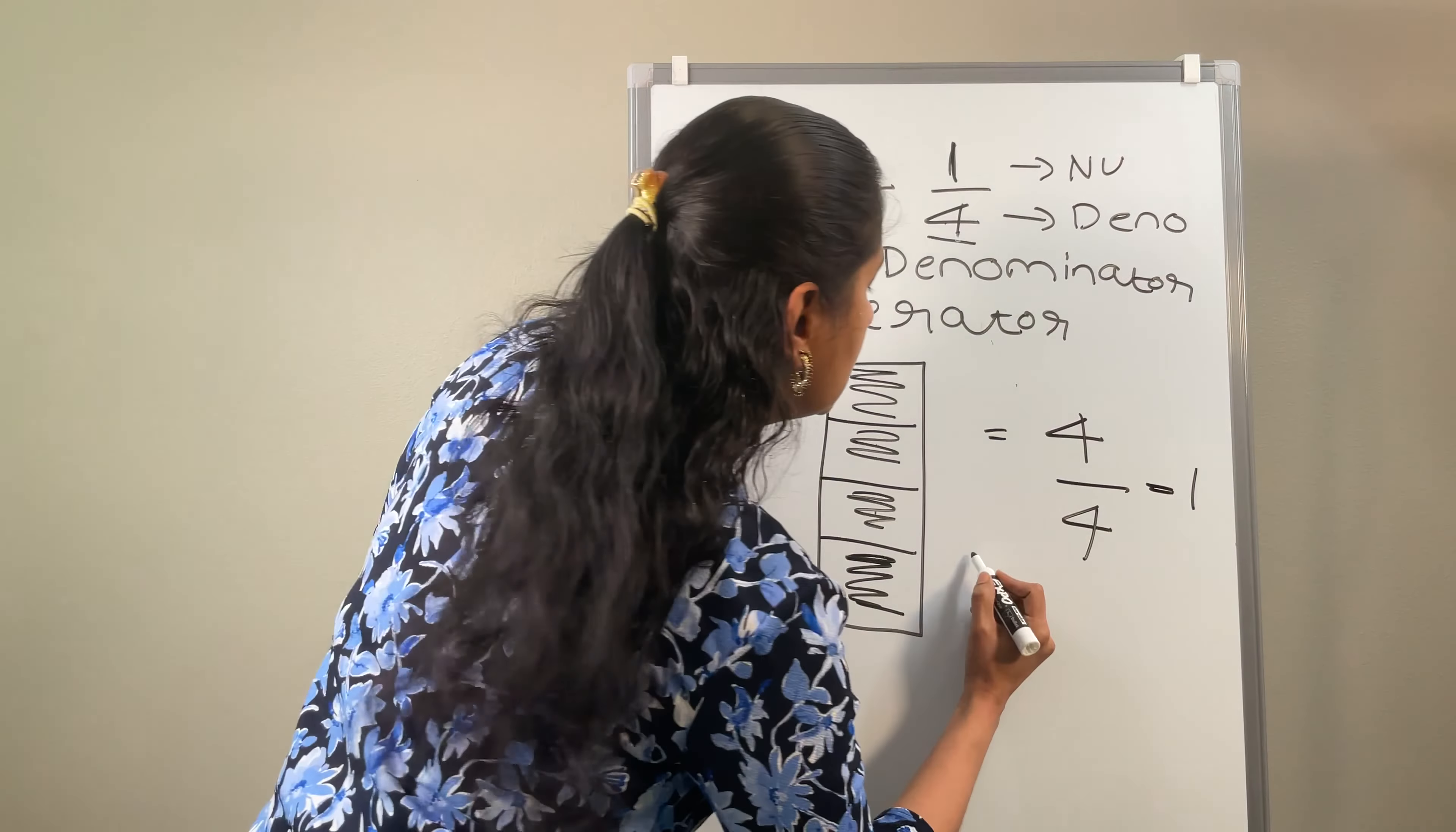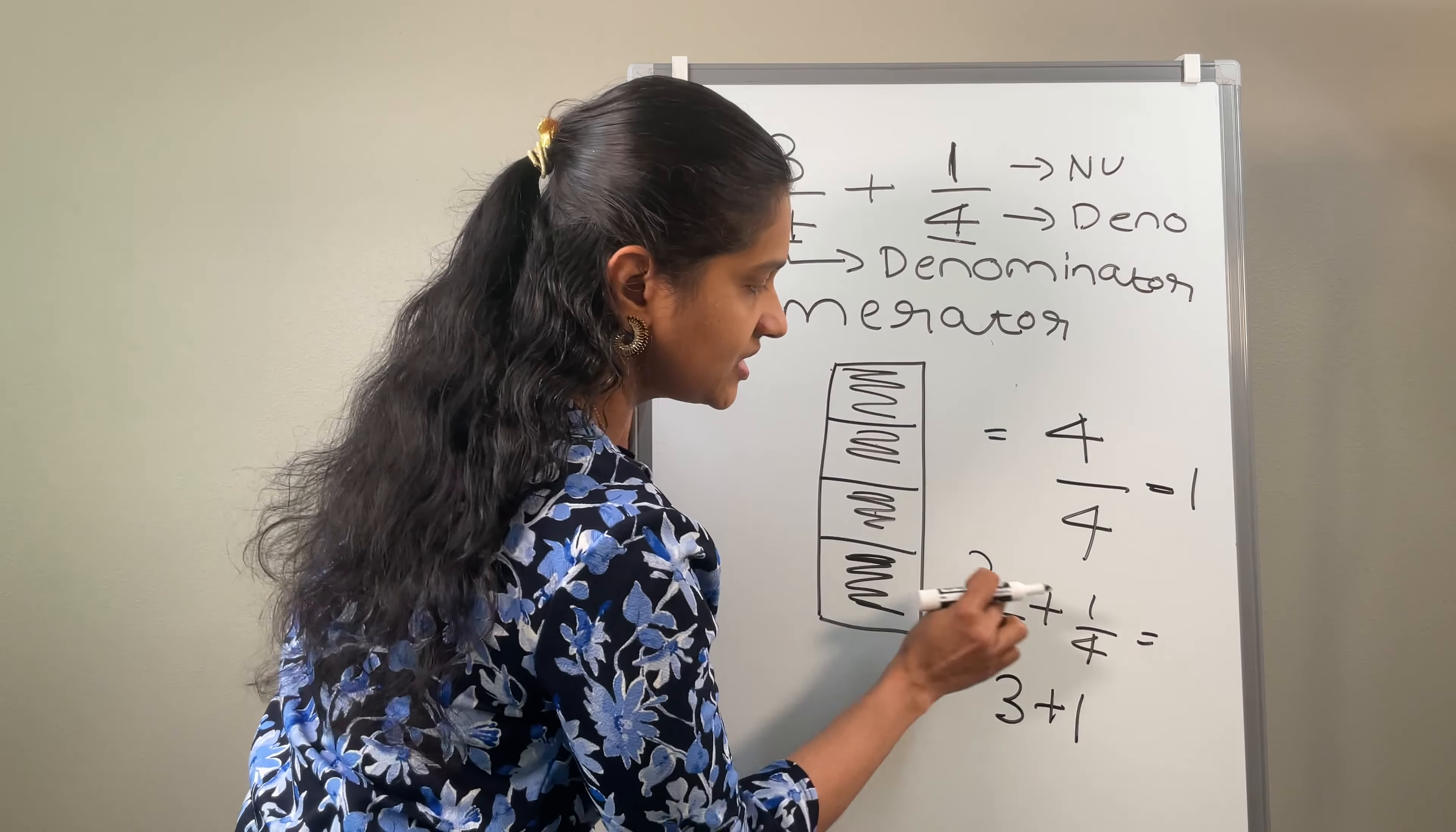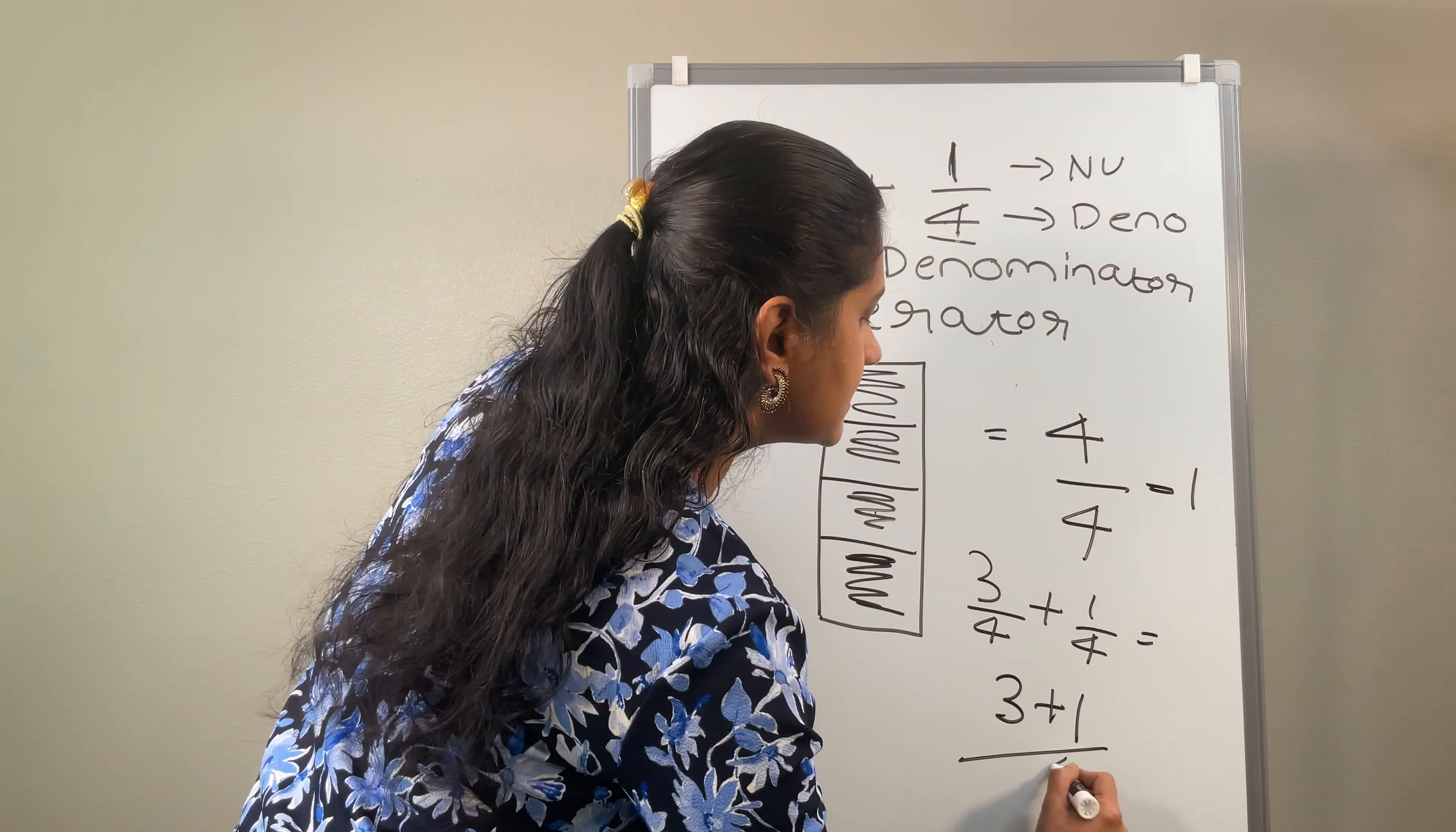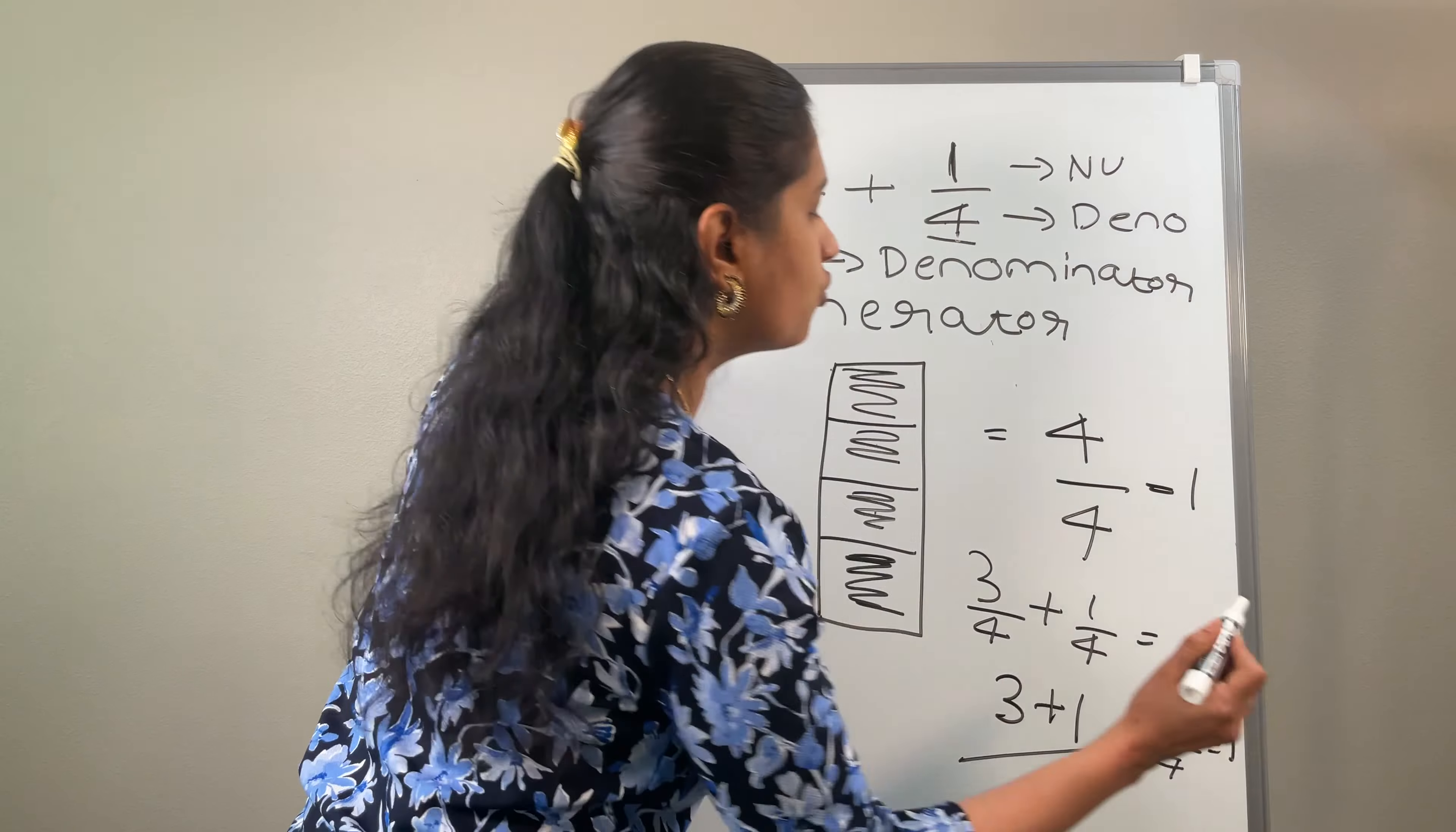Which means 3 by 4 plus 1 by 4, you can write it as 3 plus 1 by, since the denominator is the same, you can simply put 3 plus 1 by 4. What is 3 plus 1? It is 4. 4 by 4 which is equal to 1.